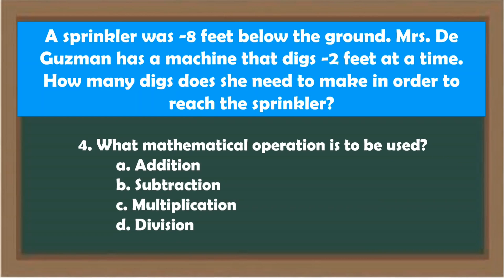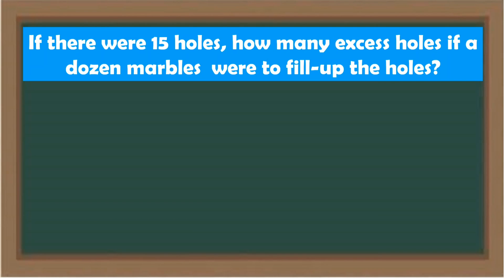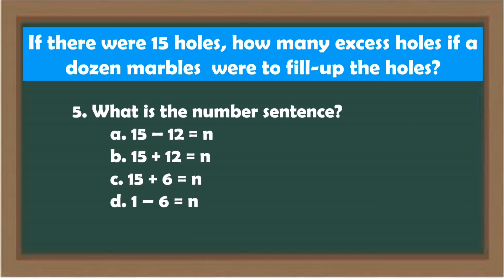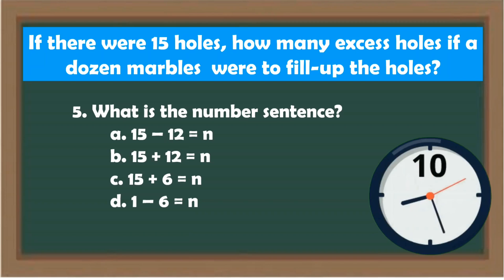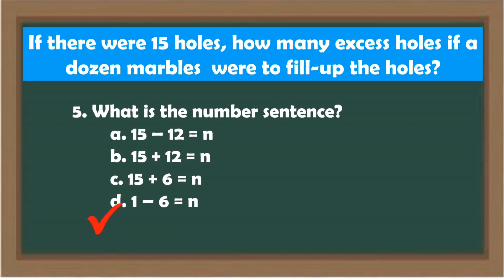The answer is letter D — Division. If there were 15 holes, how many holes exist if a dozen marbles were to fill up the holes? Number 5 — what is the number sentence? A. 15 − 12 = N. B. 15 + 12 = N. C. 15 + 6 = N. D. 1 − 6 = N. The answer is letter A: 15 − 12 = N.